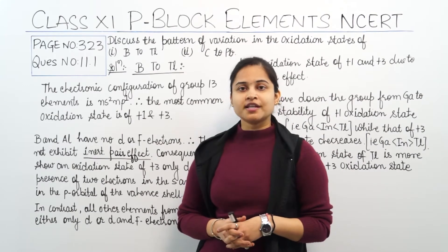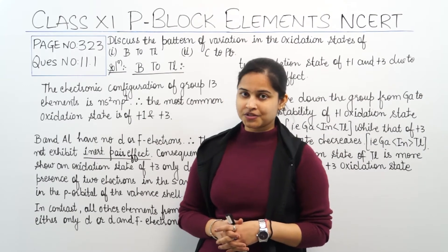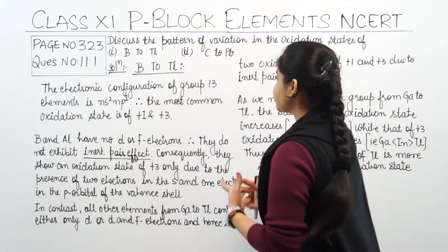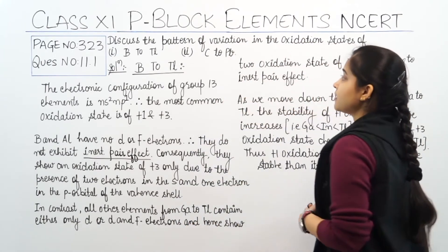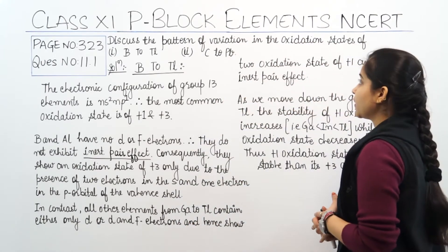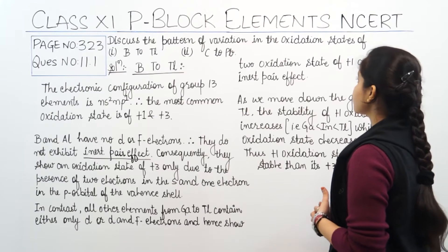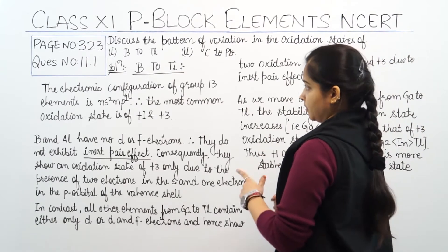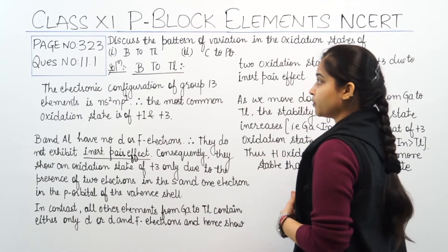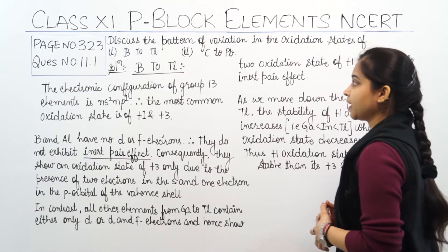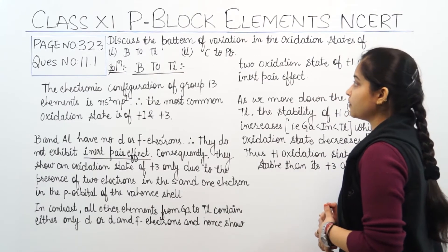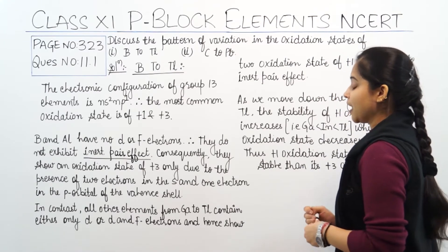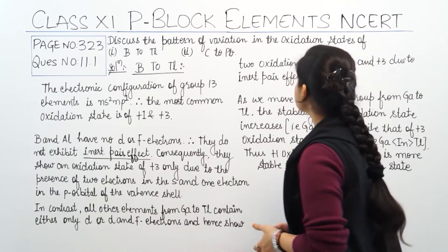First of all, let's have a look at the question and then move towards the solution. The question is: discuss the pattern of variation in the oxidation states of (1) boron to thallium and (2) carbon to lead. So we need to discuss the pattern of variation.